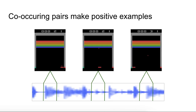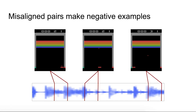To train this association model, we can get positive examples from the episodes themselves. We feed in co-occurring frames and audio, and the discriminator learns to output yes for these inputs. We construct negative association examples by shuffling the audio. With these misaligned examples, the discriminator is trained to output no.